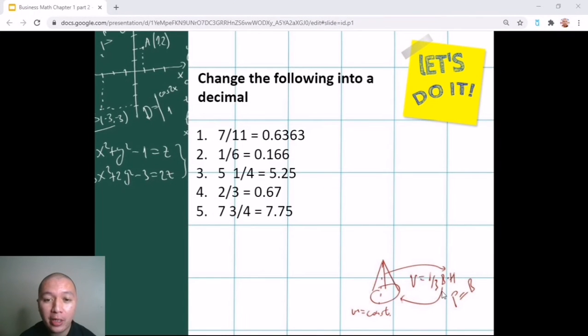So to further elaborate, here are some examples of fractions that we can convert into decimal numbers. So 7 divided by 11 is 0.6363, so that is a repeating decimal, so we would round it off. And then 1 divided by 6 is 0.166, also a repeating decimal.